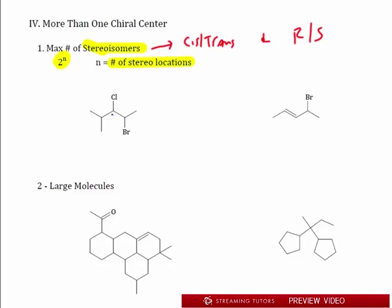For example, this carbon here is chiral and so is that one right there — hopefully you can see that quickly. Those two carbons have four different groups, but the carbon on the left has two methyls, so it can't be chiral. There are two stereocenters, so 2 to the 2 is four — meaning four possible isomers: RR, SS, RS, and SR. Those are the four possible combinations.